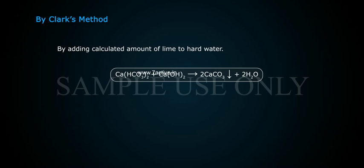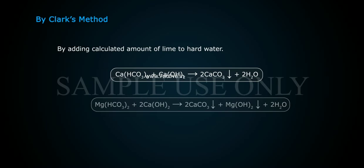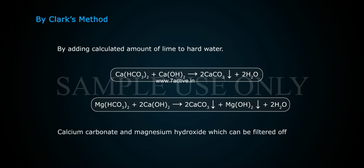By Clark's method: adding a calculated amount of lime to hard water causes the following reactions — Ca(HCO₃)₂ + Ca(OH)₂ → 2CaCO₃ + 2H₂O, and Mg(HCO₃)₂ + 2Ca(OH)₂ → 2CaCO₃ + Mg(OH)₂ + 2H₂O. The resulting calcium carbonate and magnesium hydroxide precipitates can be filtered off.